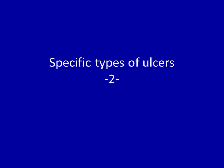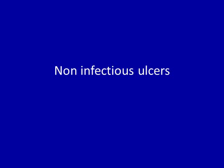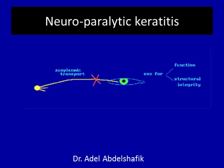Now I want to discuss some of the non-infectious corneal ulcers. The first is neuroparalytic keratitis. We all know that the cornea receives sensation from the trigeminal nerve. If there is injury to the sensory nerve supply to the cornea, this will result in a stoppage of the exoplasmic transport. Exoplasmic transport is special materials passing along the nerve to reach the terminal organ, and this material is essential for the integrity of the tissues and normal function of the terminal organ.